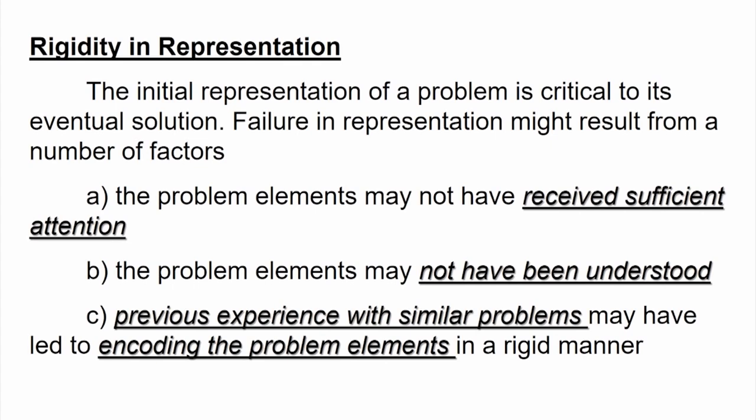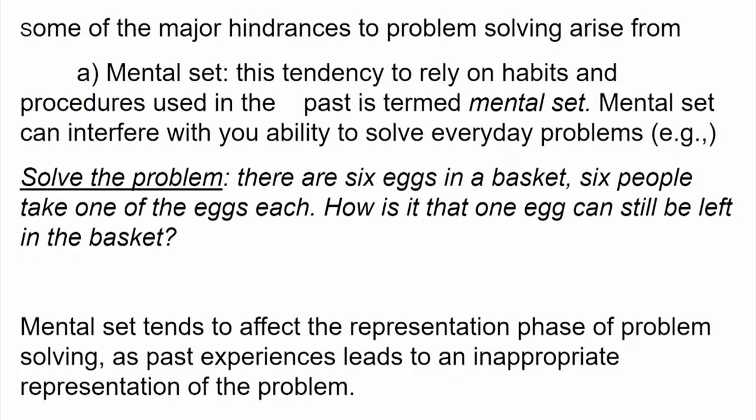A third obstacle that could arise is that previous experiences with similar problems may not have led to encoding the problem elements, leading to a rigid manner — this is basically called analogous problem solving. When solving a problem, due to past experiences, what we tend to do is think of the problem in some fixed manner, and that is basically a reason for failures in problem solving. Instead of thinking independently about a problem, we tend to use a heuristic approach matching the problem to some already stored format.